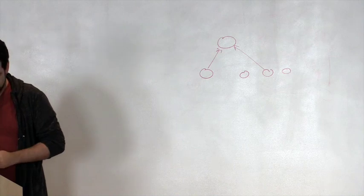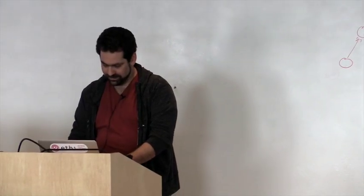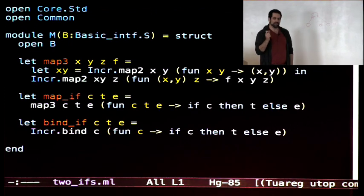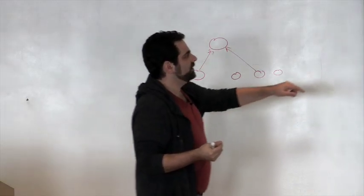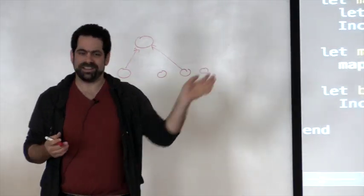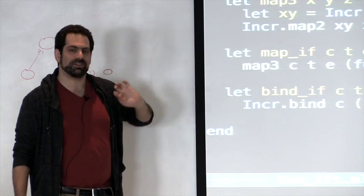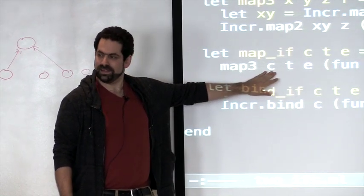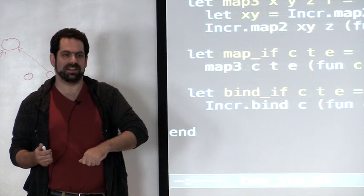Let me make the difference more concrete by looking at how you might implement if. This is a tiny piece of code using the Incremental interface that implements if in two different ways — once with map and once with bind. Even though they produce the same answer, they have different graphs and therefore different performance behaviors. The map version calls map3 on a condition, a then clause, and an else clause, and returns t if the condition is true, else e. The dependency graph here has three inputs — condition, then, and else.